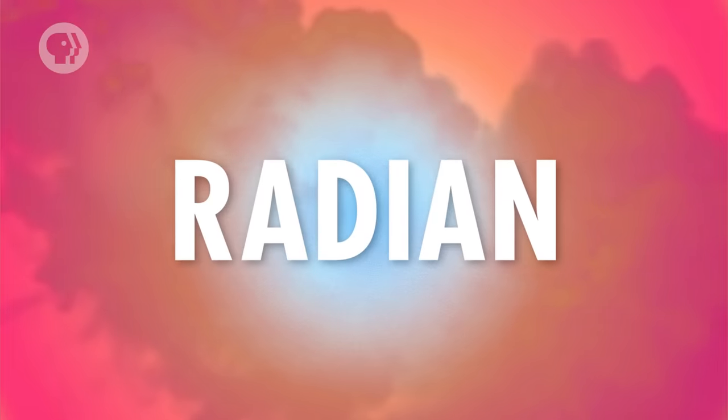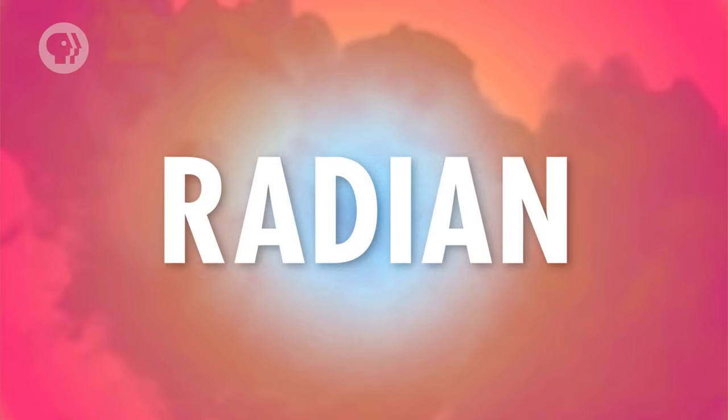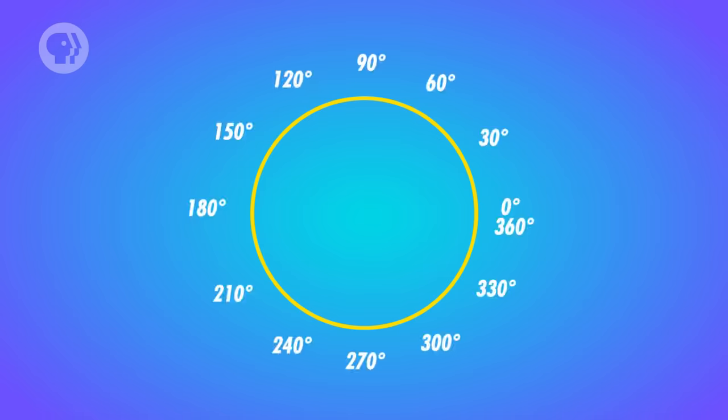But even though we've been measuring angles using degrees until now, there's another unit that physicists use a lot. This will be the primary unit we use in this episode and the next. That unit is called the radian, and its name comes from the fact that it's based on the radius of a circle. If you think back to basic geometry, you'll recall that the circumference of a circle is just two times pi times a circle's radius.